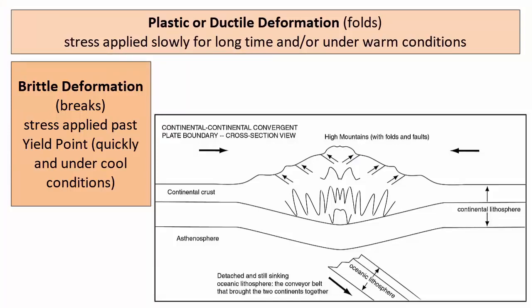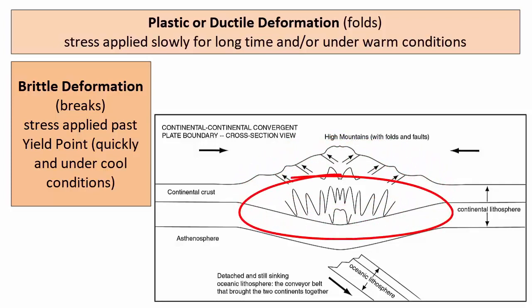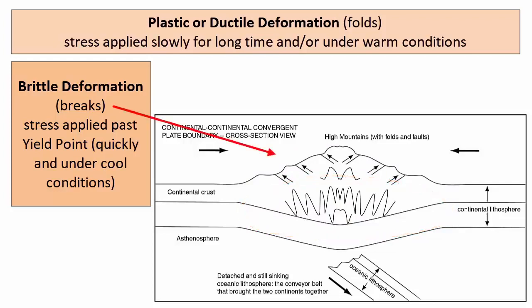Applying these principles, where would we normally expect to see each deformation happening on our planet? At the surface of the plate boundary, rocks are cool. As we descend below the surface, rocks get warmer. So we're most likely to see brittle deformation at the surface and plastic deformation at depth — faults at the top, folds below, which we can see in this illustration of a continental collision zone, creating massive mountain systems like the Himalayas, with faulting at the surface and folding at depth.